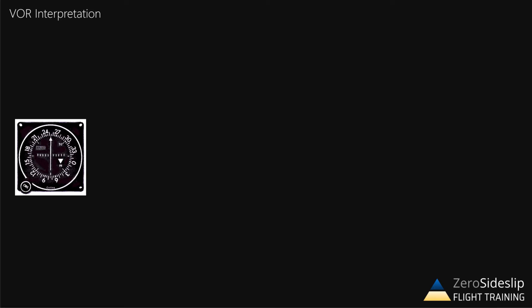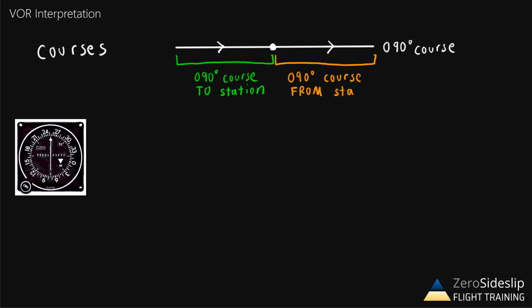First off we'll define a couple of terms. We're going to be talking about courses. If we were to draw an example of a VOR here and talk about the 090 course, then we would draw a line going through the VOR in a 090 or due east direction. The first piece on the west side of the VOR, we're going to call that the 090 course to the station. The next piece will be on the east side of the course, and we're going to call this the 090 course from the station.